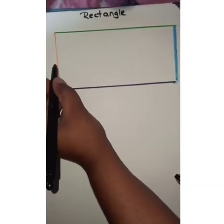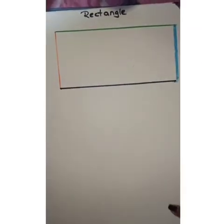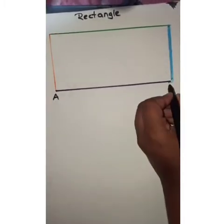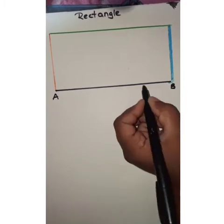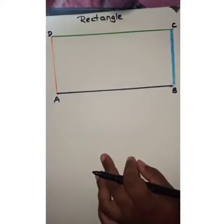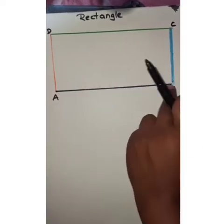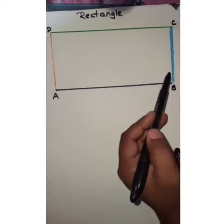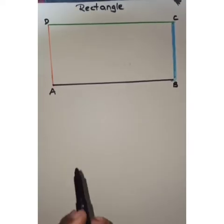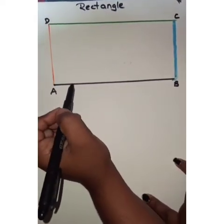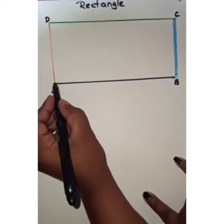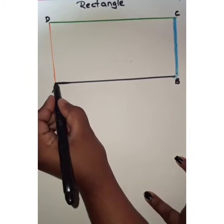We are going to name the sides of the rectangle. We have named them A, B, C, and D. So the sides are AB, BC, CD, and DA.